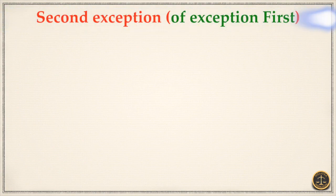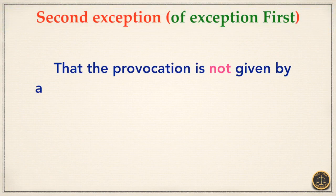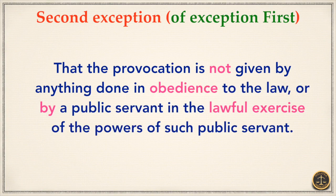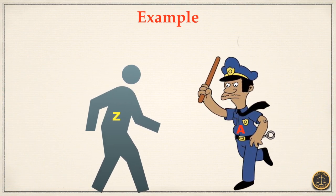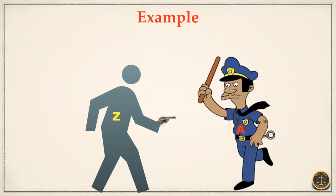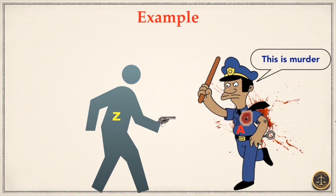Exception 2 of Exception 1: the provocation is not given by anything done in obedience to the law, or by a public servant in the lawful exercise of the powers of such public servant. For example: Z is lawfully arrested by A. A is excited to sudden and violent passion by the arrest and kills Z. This is murder, inasmuch as the provocation was given by a thing done by a public servant in the exercise of his powers.